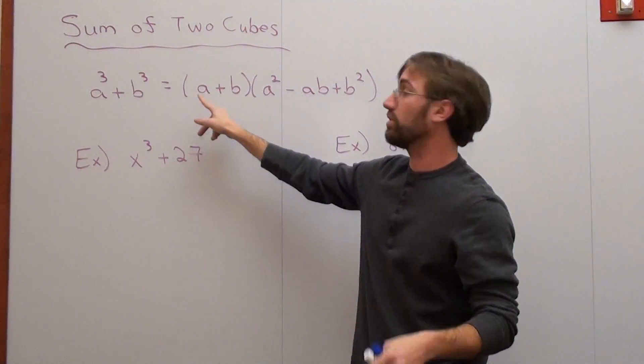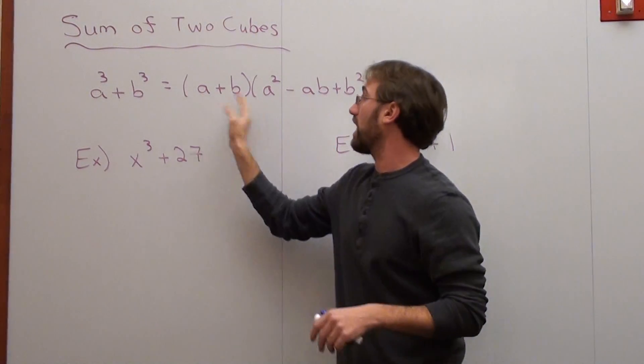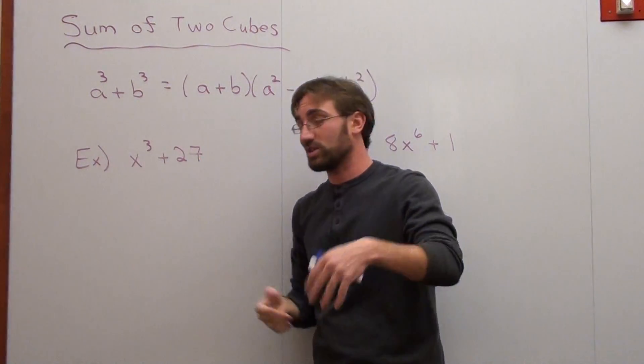But actually, if you check the proof, if you multiply all these out, distribute, etc., it'll cancel and become a³ + b³, which is actually pretty fascinating.